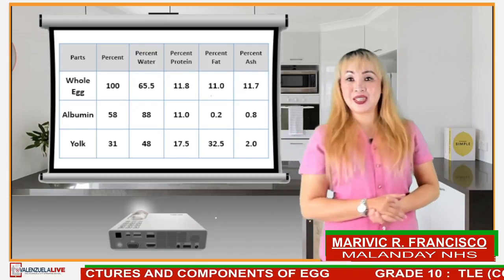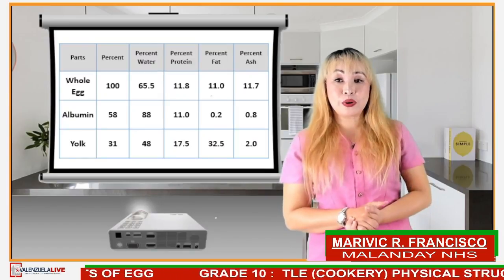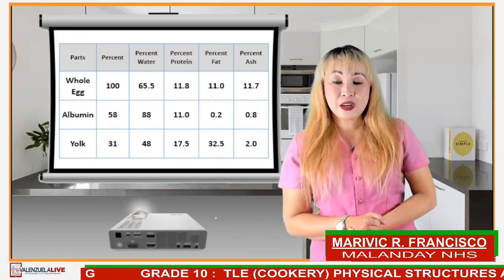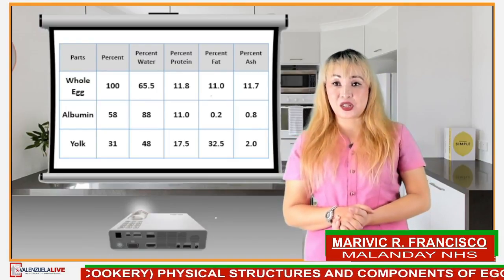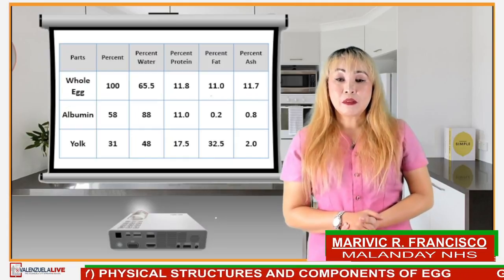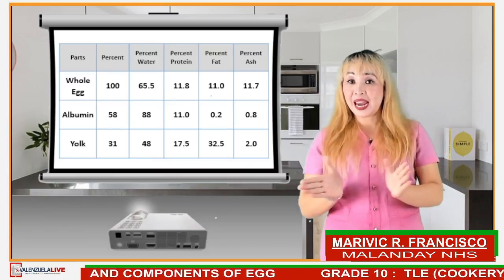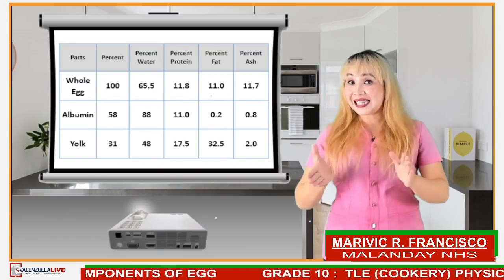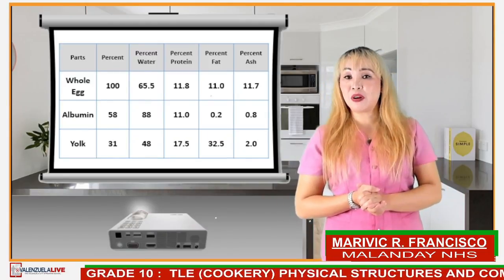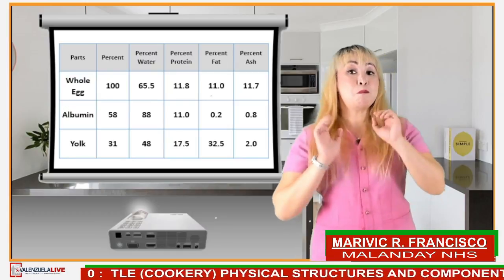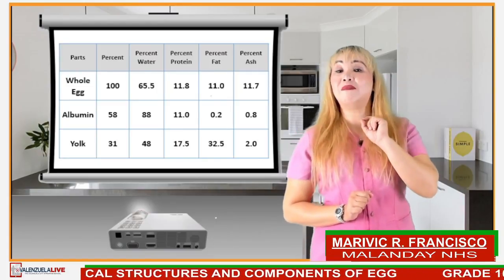As you can see, a whole egg has 65.5% water content, 11.8% protein, 11% fat, and 11.7% ash. For the albumin, it has 88% water, 11% protein, 0.2% fat, and 0.8% ash. For the yolk, it has 48.8% water, 17.5% protein, 32.5% fat, and 2.0% ash.